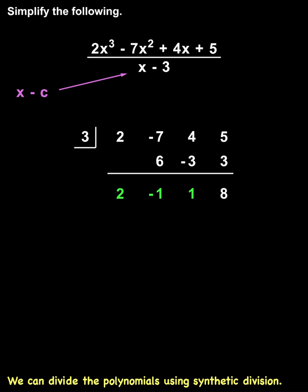The first three numbers represent the coefficients of the quotient, and the last number is the remainder. And it's important to understand that our answer will be 1 degree less than the dividend.